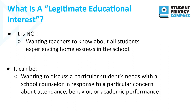Sharing the names and addresses of students experiencing homelessness with an outside agency requires parental consent, or consent of the student if age 18 or over — even if the motivation is helpful, such as wanting to ensure students can access food resources or community support. Providing that information to outside agencies without consent would be a violation of FERPA and McKinney-Vento. It can also put student safety at risk, particularly in situations of domestic violence, and makes students feel private information is being shared with people who don't have the right to it.